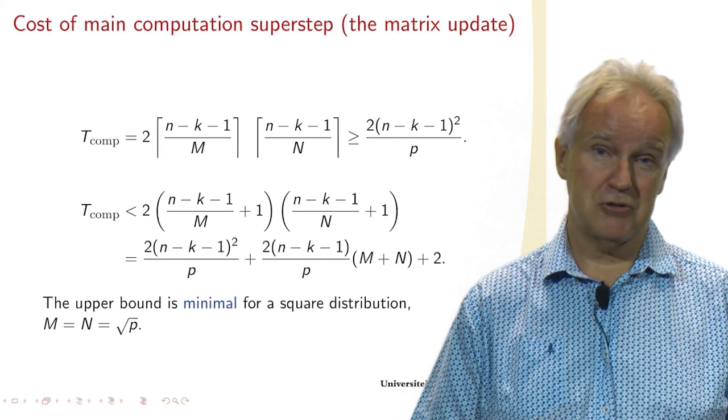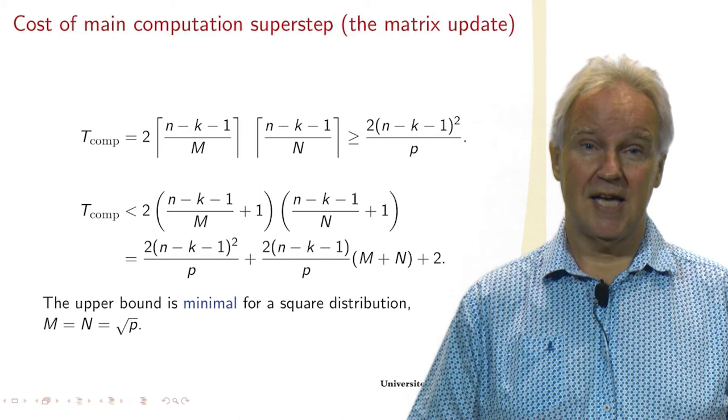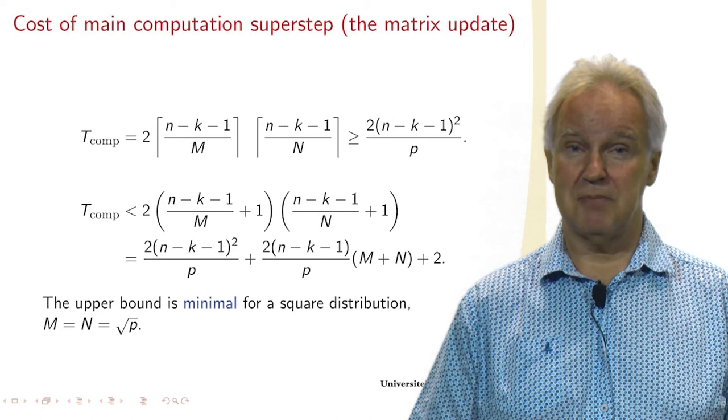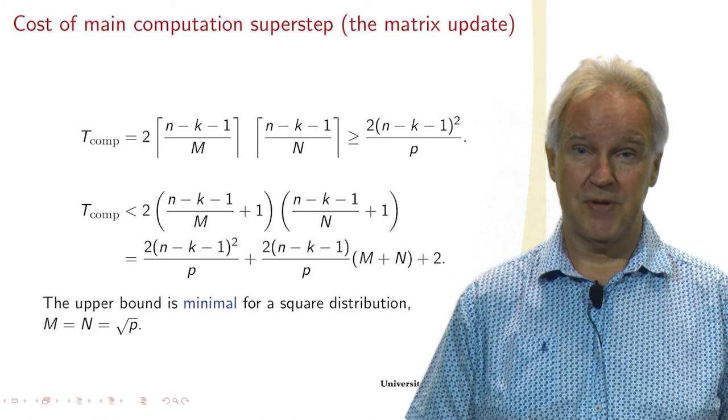And if we round that, then we see that this number is larger than or equal to 2 times (N-K-1)^2 divided by P. The P comes from M times N. So that's a lower bound on the cost.